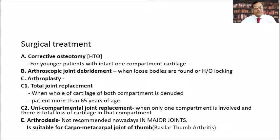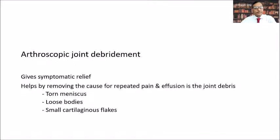Total joint replacement is recommended for patients more than 65 years of age. Unicompartmental joint replacement is recommended when there is total loss of cartilage in a particular compartment. Arthrodesis is usually not recommended for major joints nowadays but is still suitable for the carpometacarpal joint — also called basilar thumb arthritis. Arthroscopic joint debridement gives symptomatic relief by removing the torn meniscus, loose body, and small cartilaginous flecks.